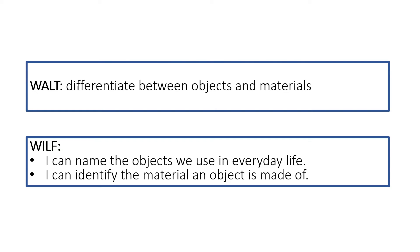So what are we learning today? We will be learning to differentiate between objects and materials. Our goals for today are: I can name the objects we use in everyday life, and I can identify the material an object is made of.